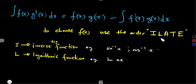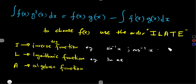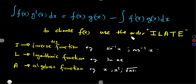After the logarithmic, we have A, which represents the algebraic function. Any algebraic term — for example, x, x², or even expressions under a square root such as √(x−1) or √(2x+1) — these can all be used as the algebraic part. They can be under a square root and still be considered algebraic.